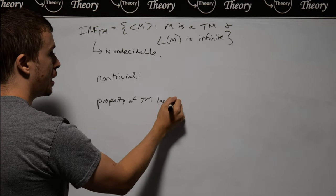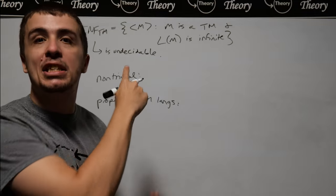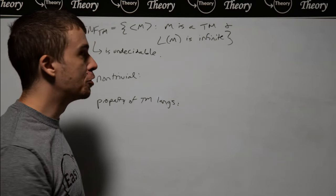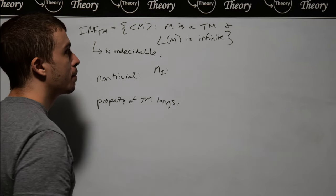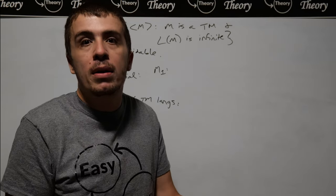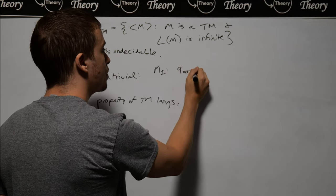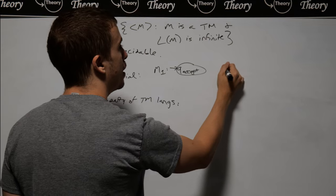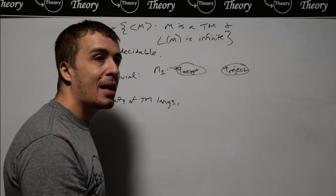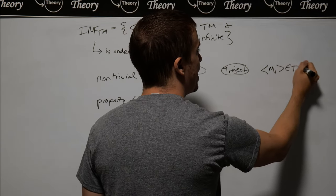To show it's non-trivial, I'll break it up into two steps — find a machine that's in there and another that is not. We need to first find a machine, M1, that accepts infinitely many strings. The easiest one is the machine that accepts every string. If I have a machine where the accept state is the start state, this machine accepts every single string, and therefore its language is infinite by construction. So the description of M1 is in inf-TM.